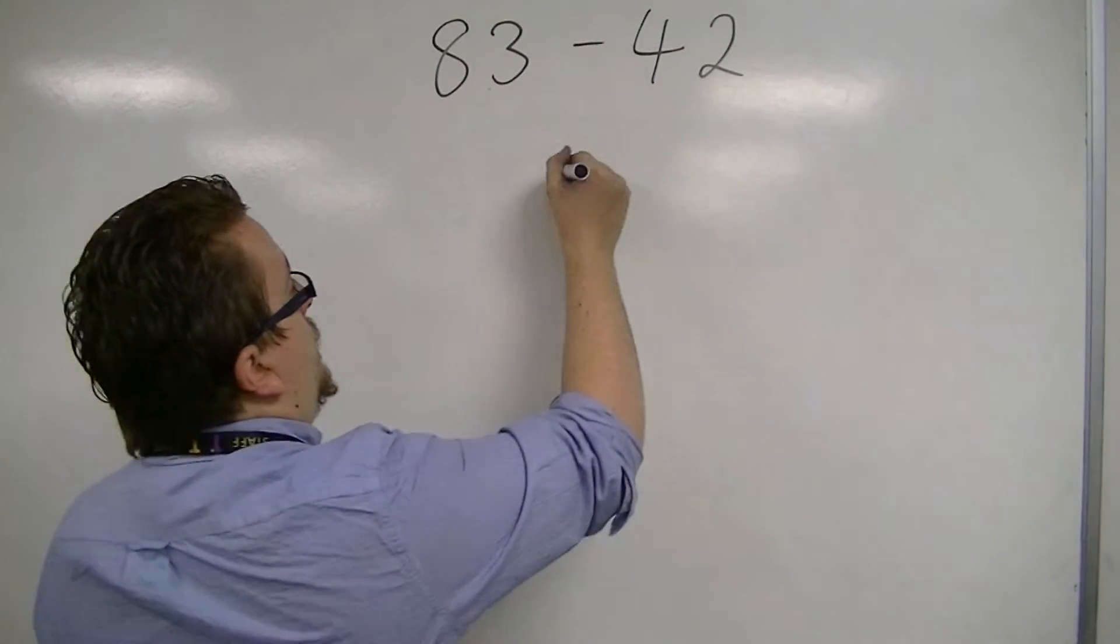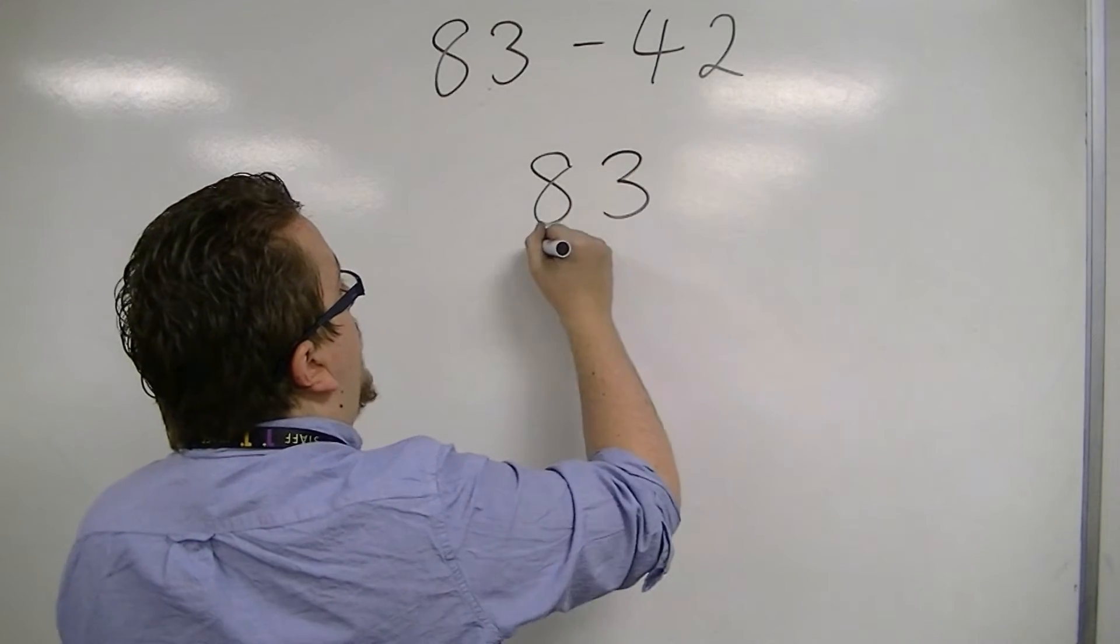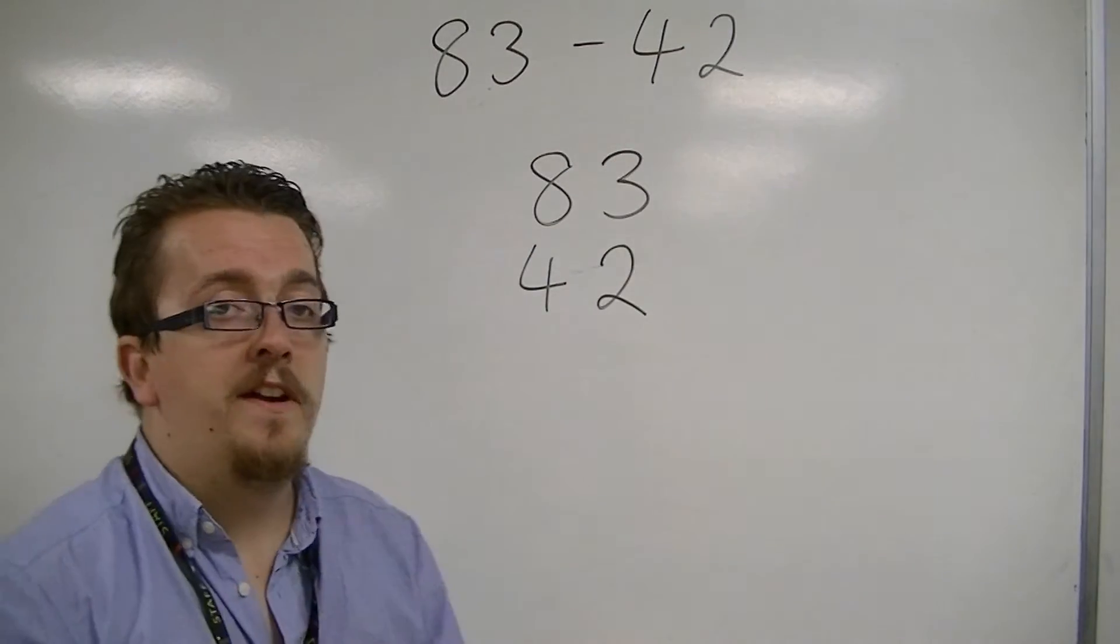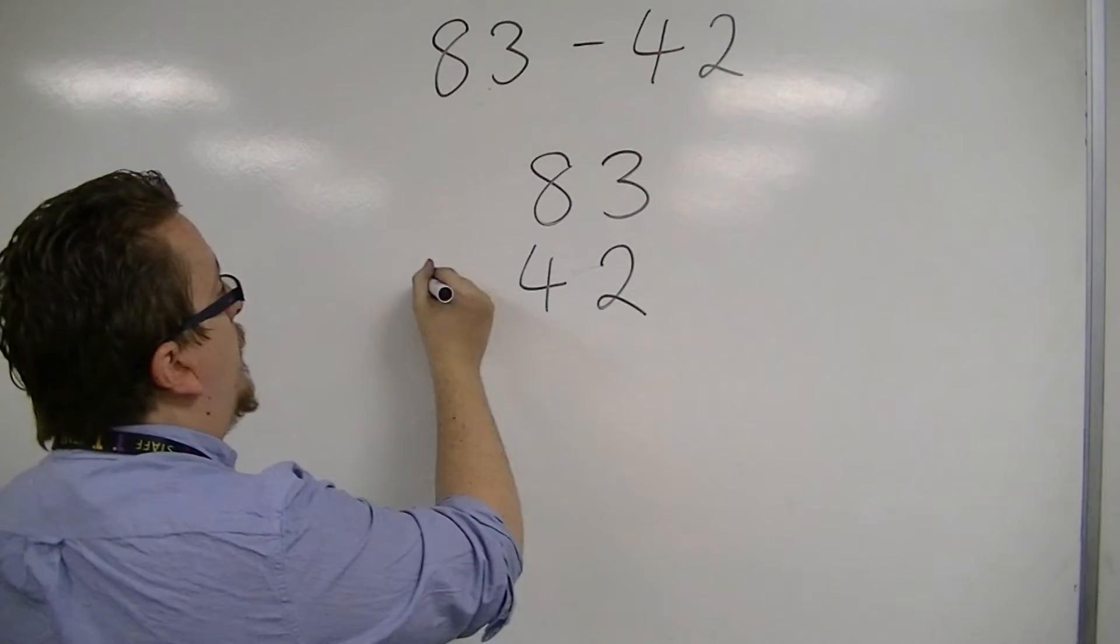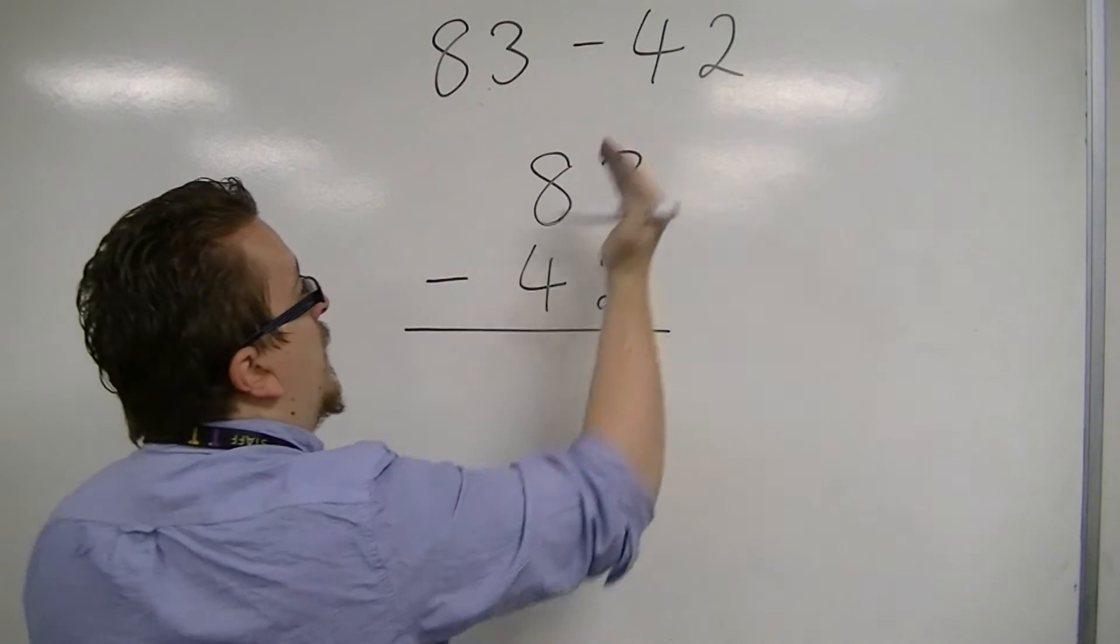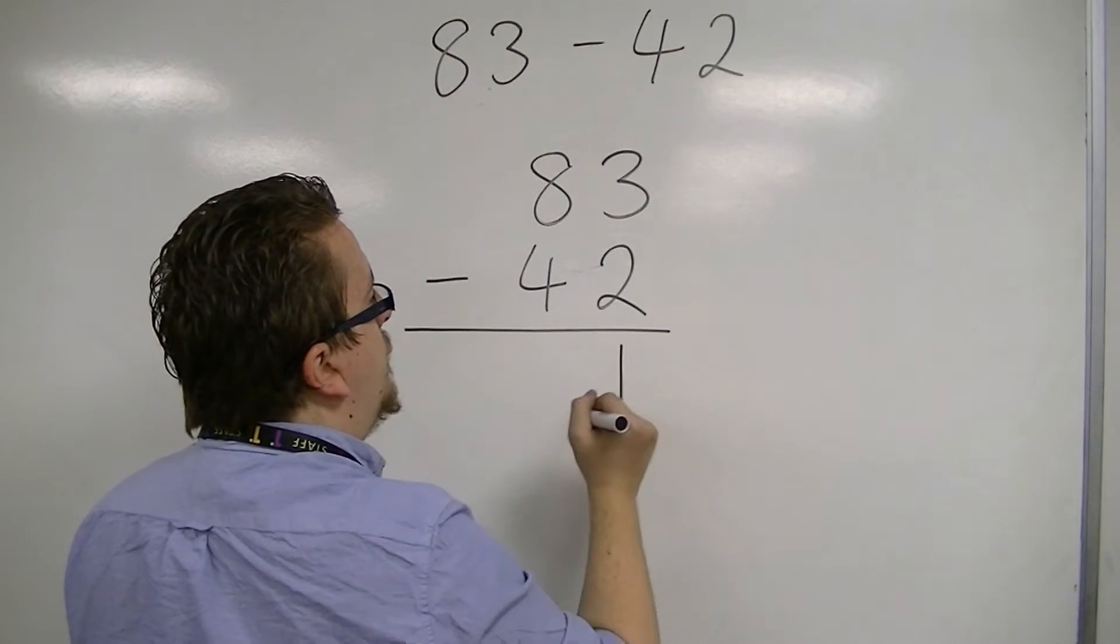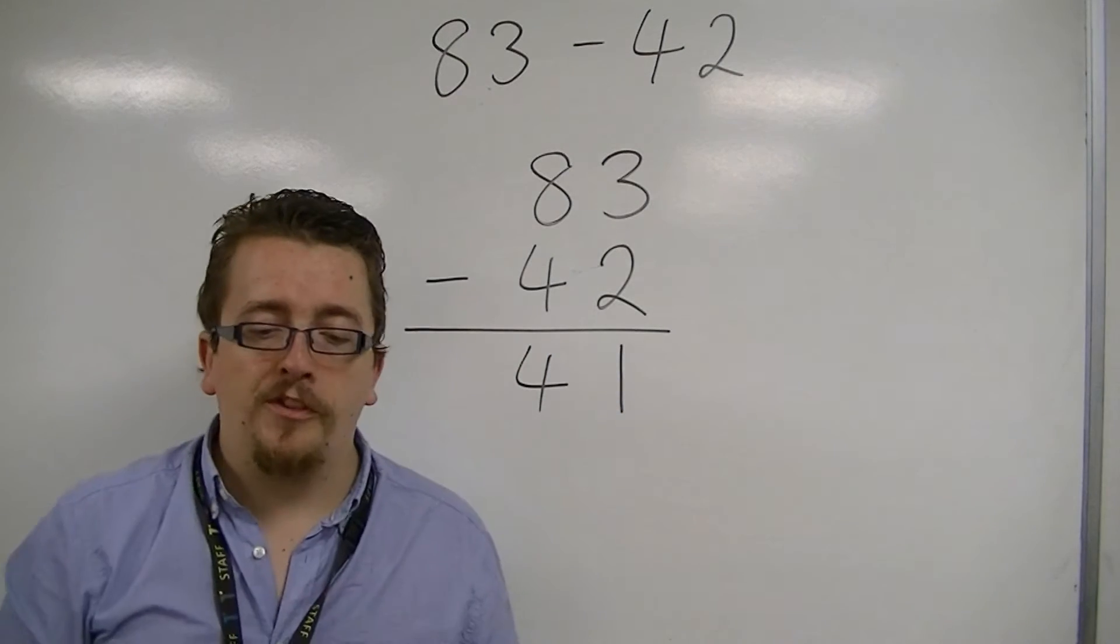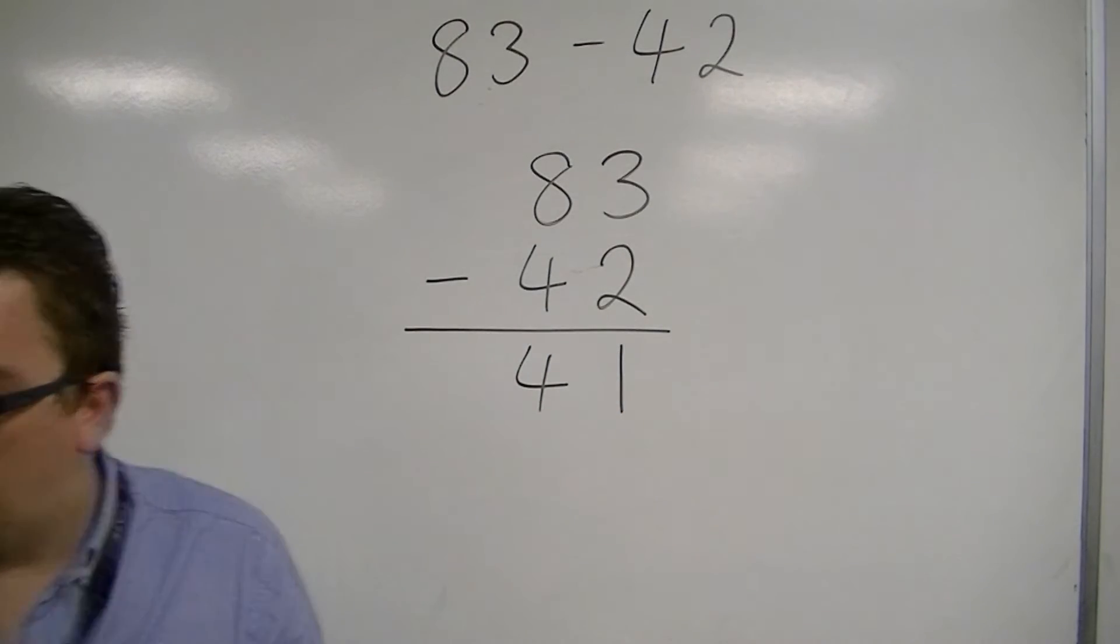Like addition, we write them in place order, so the units must line up, the tens must line up. Working from the right to the left, 3 take away 2 is 1, 8 take away 4 is 4, so our answer is 41. Nice and easy to start off with.